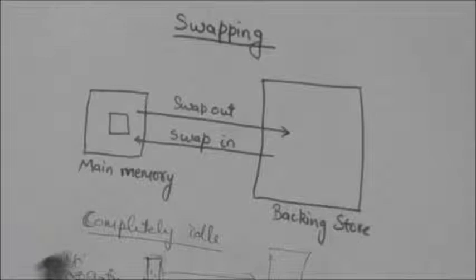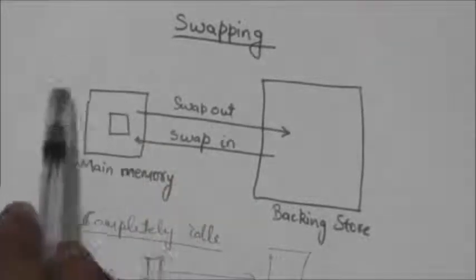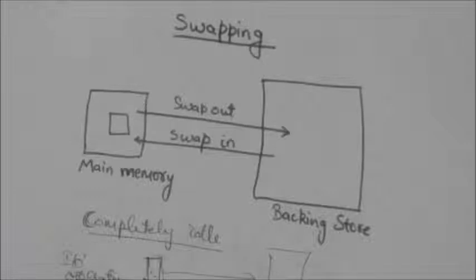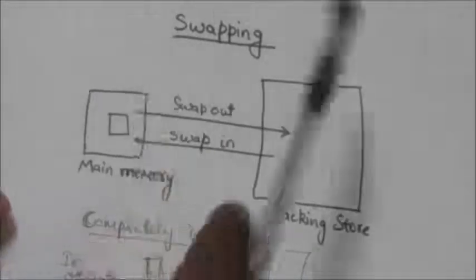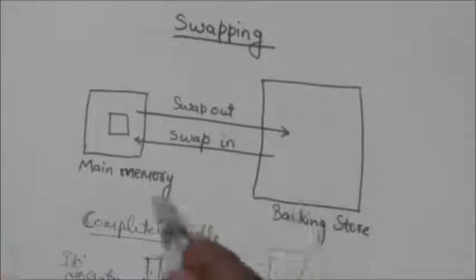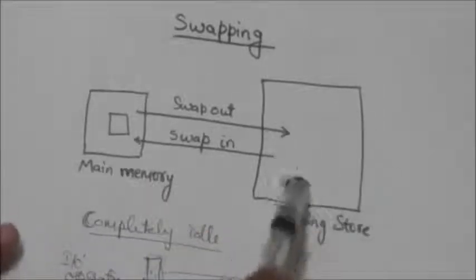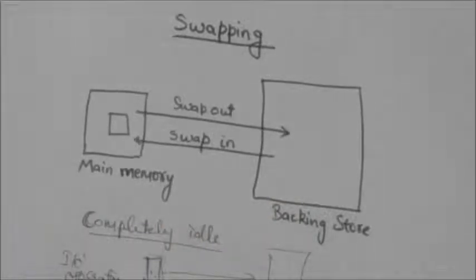Consider another example: suppose a high priority process has arrived and the main memory is completely occupied — there is no free space available for that high priority process. So what happens is some low priority processes will have to be swapped out from main memory to backing store, so that the new high priority process can be loaded in main memory and executed.